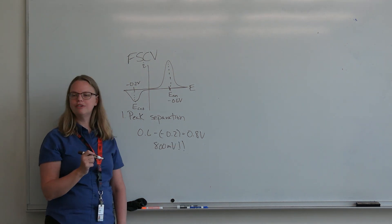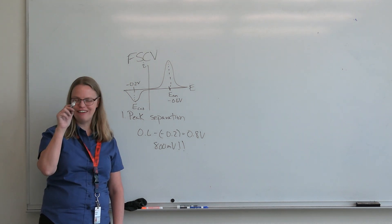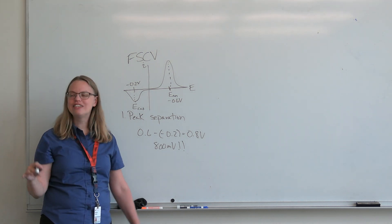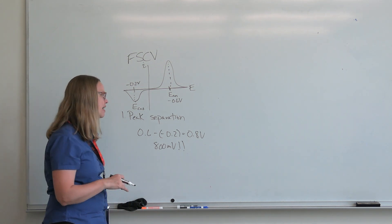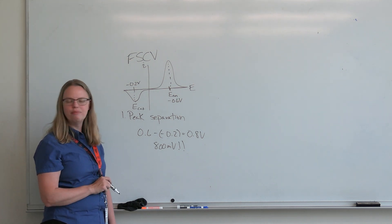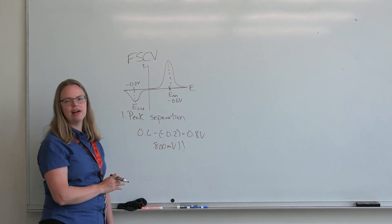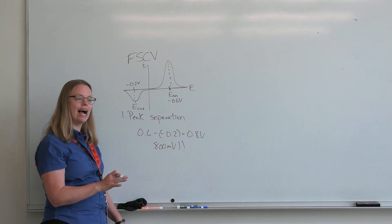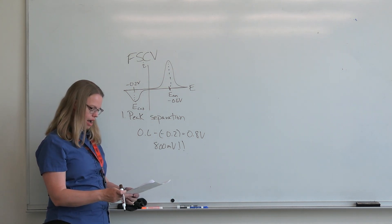I told you that it should be 59/n millivolts if we were looking at a diffusion-controlled system — where n equals 2, that gives about 30mV — and we're at 800mV. So we're not very close to anything theoretically good for voltammetry. I also mentioned we should compare it to adsorption, where delta peak is 0. So delta peak is very wide. These peaks are really separated compared to other things.